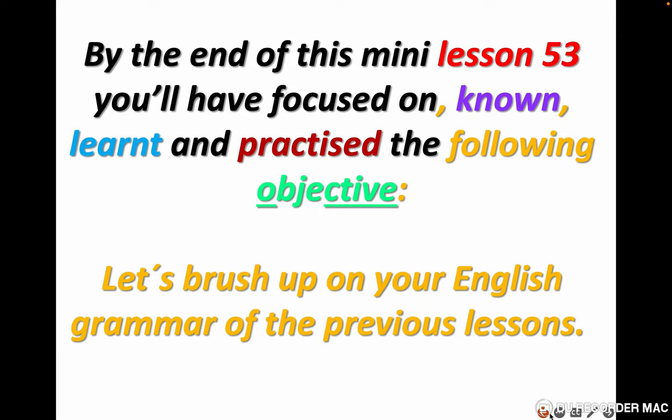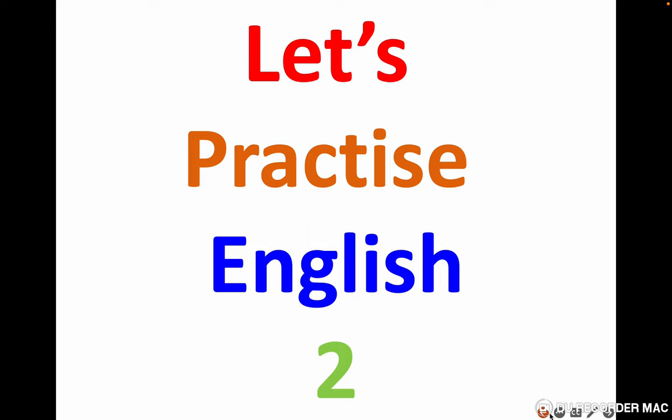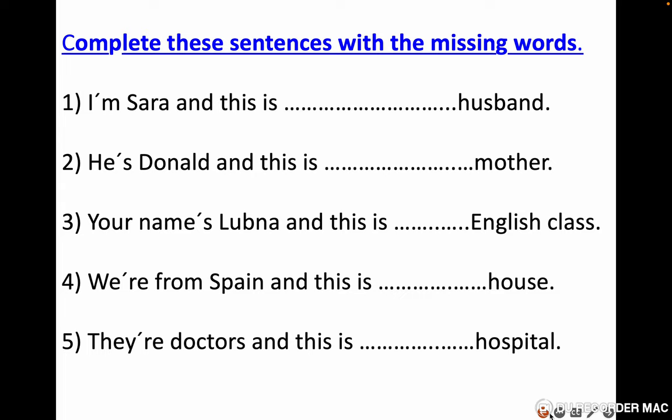Let's see how good your grammar is. Let's continue. Complete these sentences with the missing words. I'm Sarah and this is — positive adjective. Number two: he is Donald and this is — mother, positive adjective. Your name's Lubna and this is — English class. We're from Spain and this is — house. And the last example: they're doctors and this is — hospital. Let's see the answers.